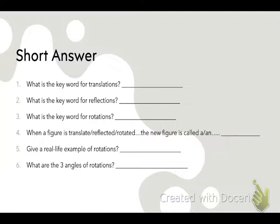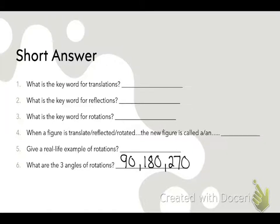Next question: What are the three angles of rotation? Isaac answered correctly — 90 degrees, 180 degrees, and 270 degrees. Those are your three angles of rotation: 90, 180, and 270. Come shoot, buddy.